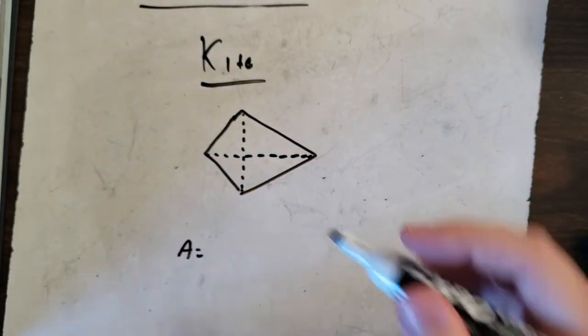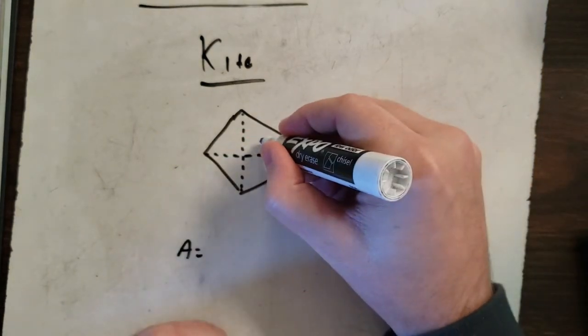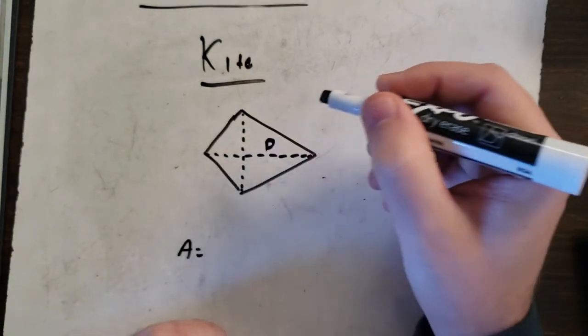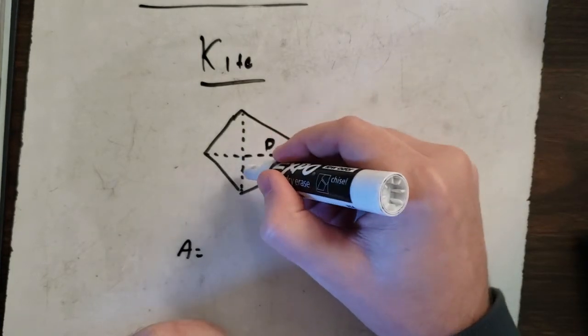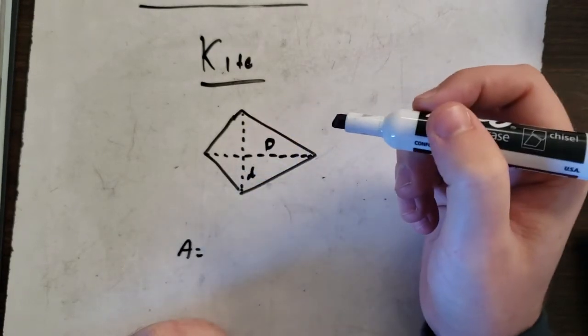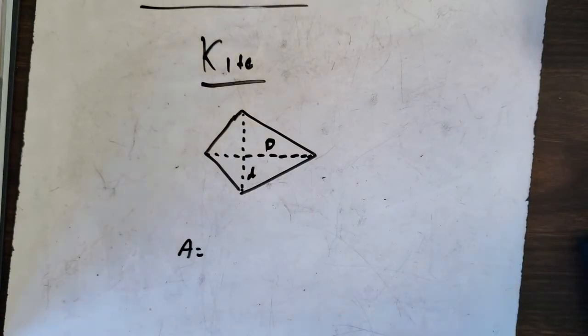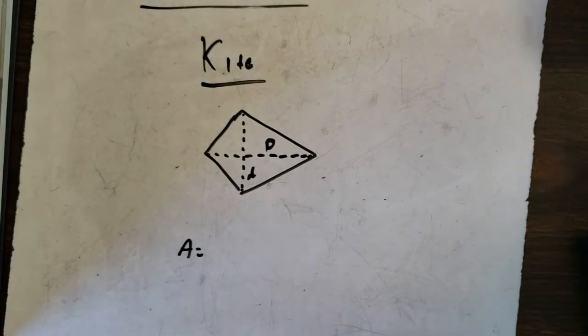So this long line will be capital D, and a smaller line will be lowercase d. That's what it's going to give you.